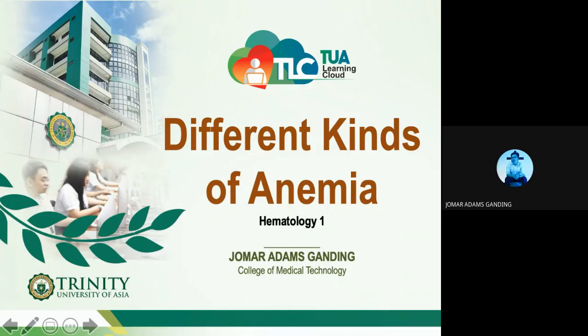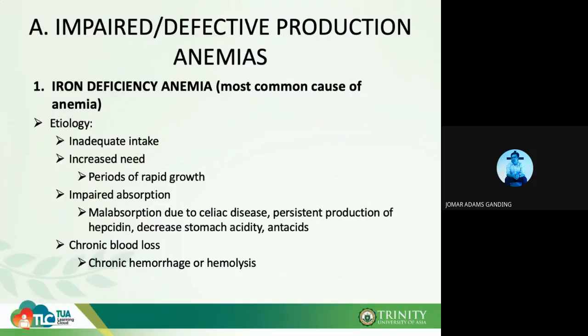For this morning we will continue with different types of anemia. We will be talking about iron deficiency anemia, anemia due to chronic disease, hemosiderosis, hemochromatosis, and also megaloblastic anemia. So first: impaired or defective production of anemia — we're not talking about the number of RBCs being produced, but the quality of RBCs.